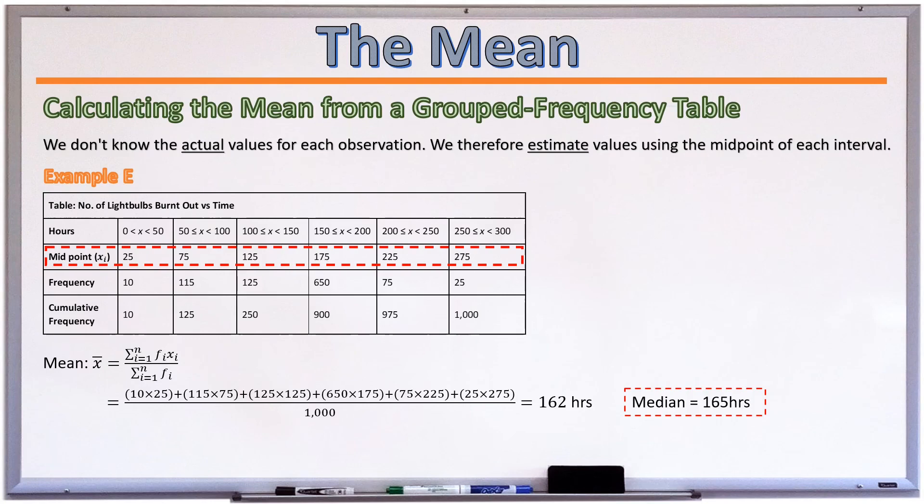So here, the mean is relatively close to the median that we estimated earlier from the cumulative frequency curve that we drew. So recall that the median was 165.